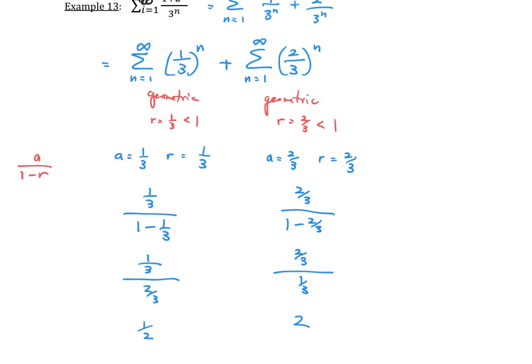So, remember, I added these two series together. Let me put a plus there. And that gives us 2 and a half or 5 halves, if you wanted to write that as an improper fraction. So, to summarize,